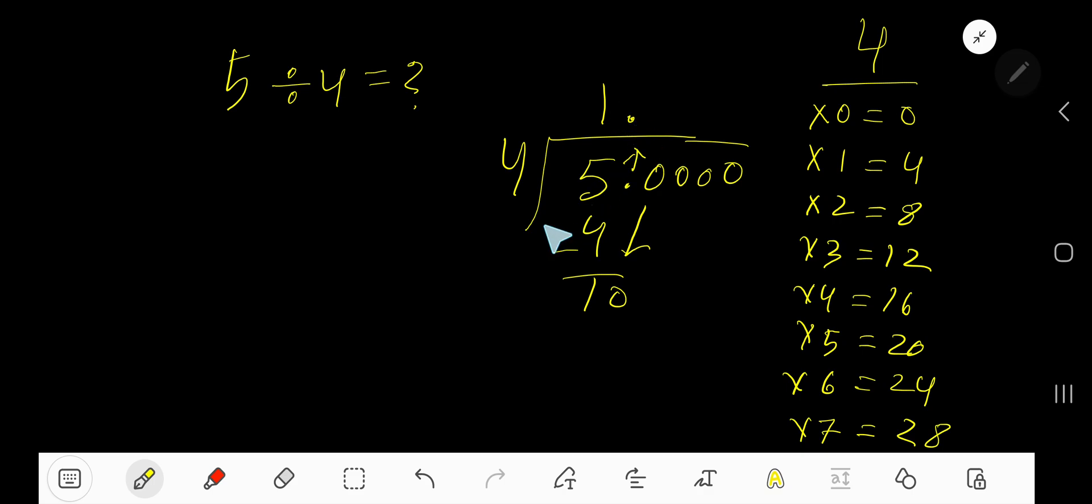4 goes into 10 how many times? 2 times is 8, 3 times is 12 which is greater, so 2 times. Write 2. 2 times 4 is 8. Subtract, you get 2. Bring down another 0.